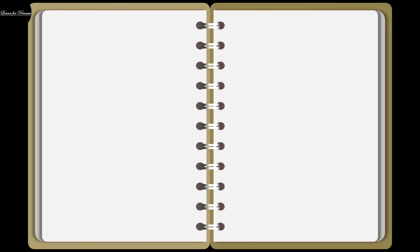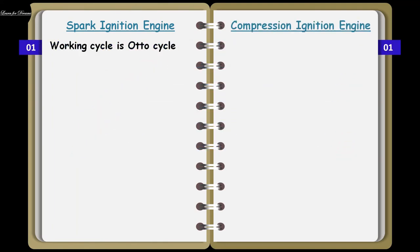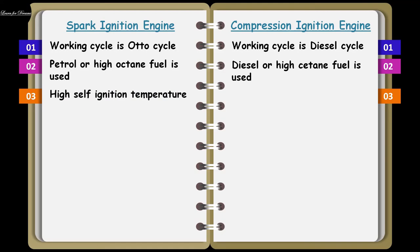Next we are going to see the difference between the spark ignition engine and the compression ignition engine. The spark ignition engine is also called a petrol engine or gasoline engine, and the compression ignition engine is also called a diesel engine. The first difference is the working cycle — spark ignition engine works on the Otto cycle, and the compression ignition engine works on the diesel cycle. The next difference is the fuel used — petrol has a high octane number in SI engine, and diesel has a high cetane number in CI engine.